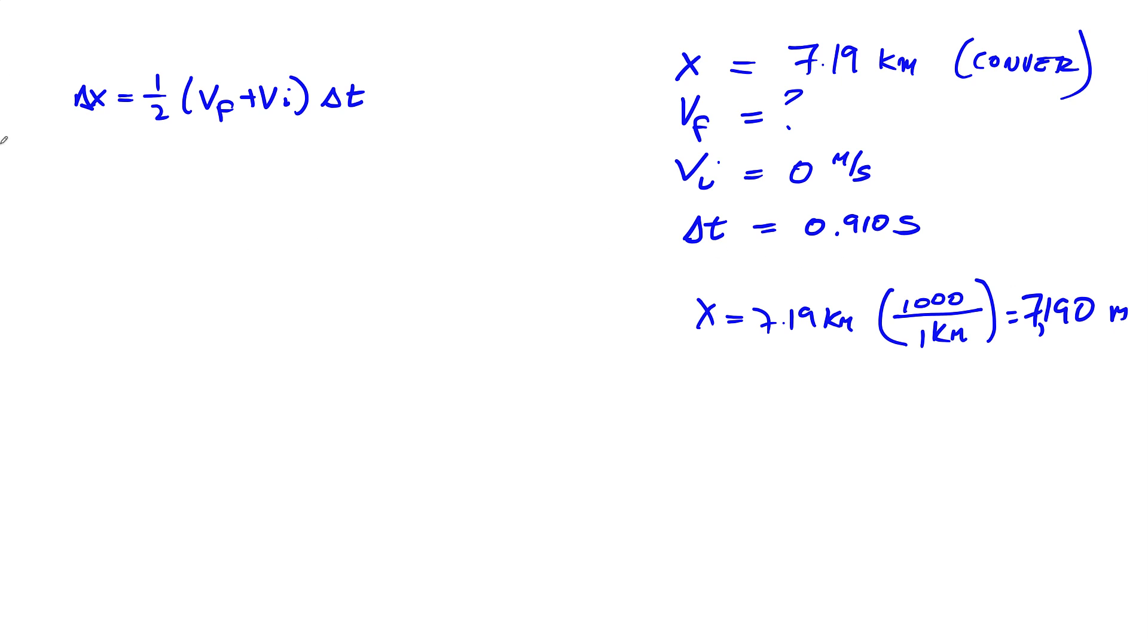Let's look over here. Here's our equation. This is what we're going to use. We're looking for vf. Now we've got something that's going to help us. Notice that vi is zero. This goes away, so we're going to rewrite this equation: Δx equals one-half vf times Δt.